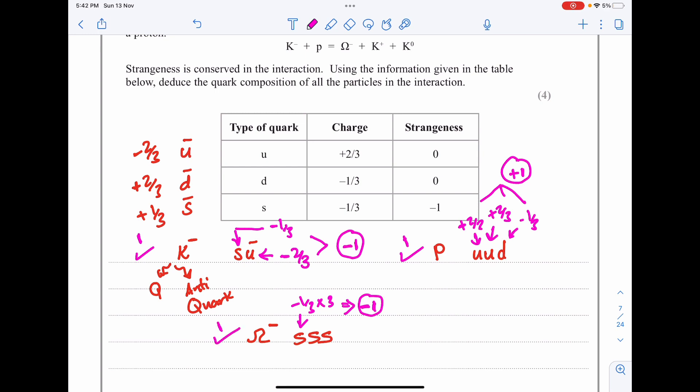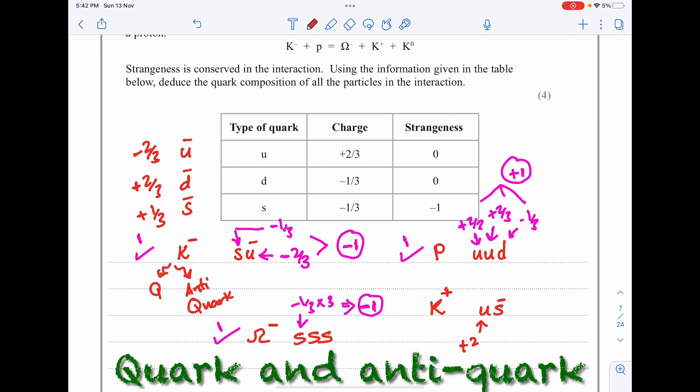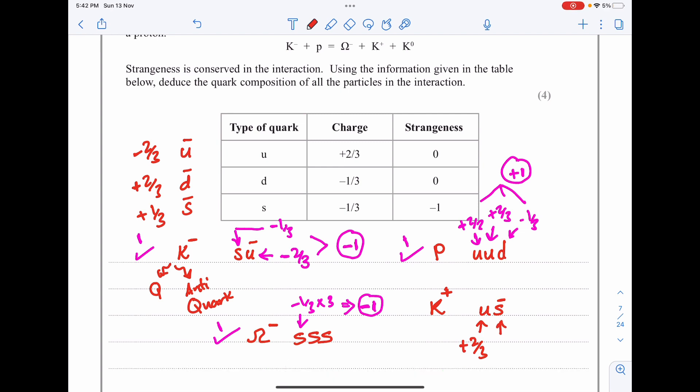The composition of the omega negative is done. K⁺ is positive, consists of an anti-strange which is +1/3 and up which is +2/3, and these give us +1. Get one mark for the K⁺ which is positively charged.